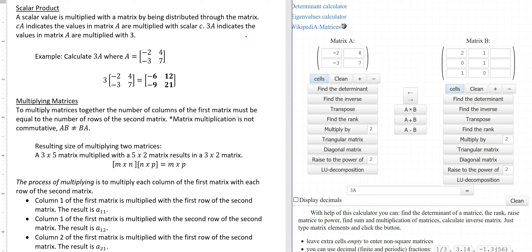And the example below shows that. I'm going to take and calculate 3A and I've been given this matrix A. So I multiply 3 with every single element in the matrix. That provided me with this answer of negative 6, 12, negative 9, and 21.